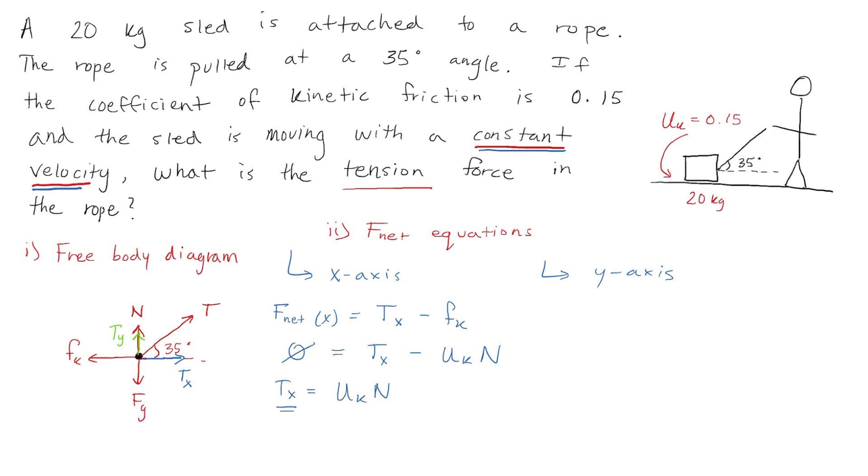Now this equation contains Tx. But we want to solve for the tension force T. So how do we replace Tx with T? Well let's do some vector addition. We can add Tx and Ty tip to tail and form a right angle triangle with our tension force T as the hypotenuse. And now we can use some trigonometry. So we know sine theta is equal to opposite over hypotenuse. And cos theta is equal to adjacent over hypotenuse.